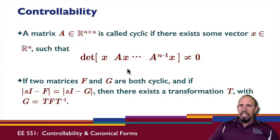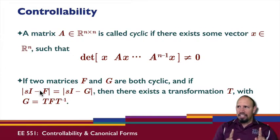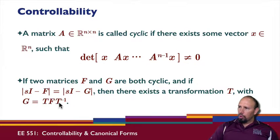A special thing about this is that if two matrices F and G are both cyclic, and if they have the same characteristic polynomial, then there's a transformation matrix T in which I can transform from one coordinate system to the other. The two matrices are similar.